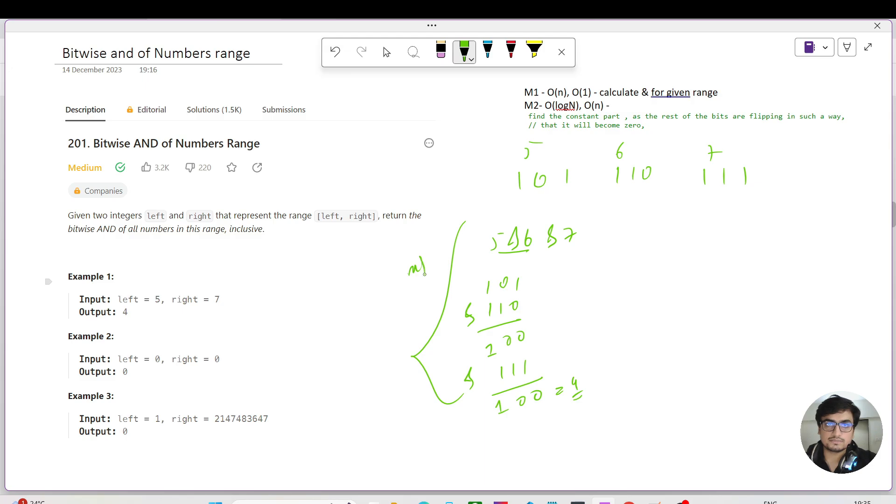Method one is the brute force approach. The time complexity is O(n) and space complexity is O(1). We calculate the AND for the given range. Each AND operation takes O(1), but since we're traversing the entire range, it becomes O(n).